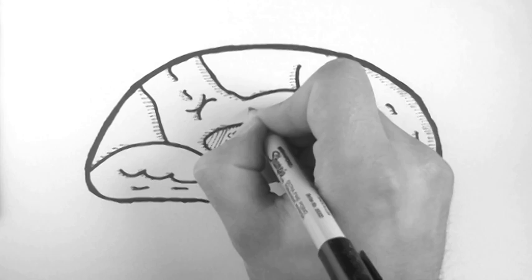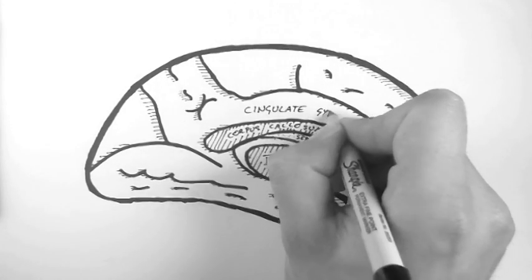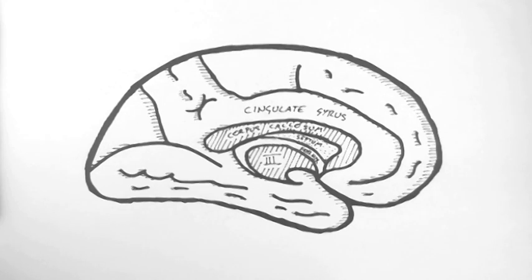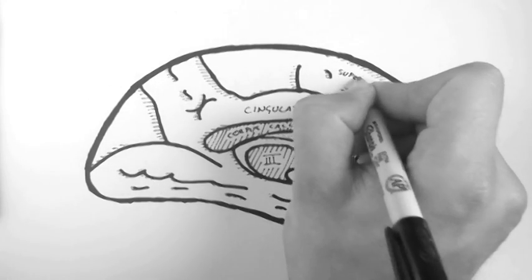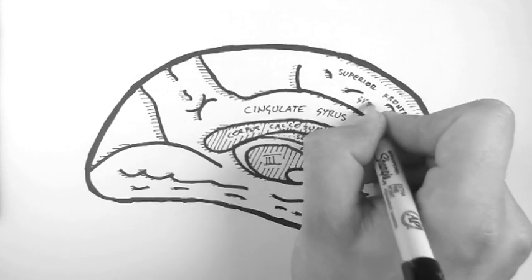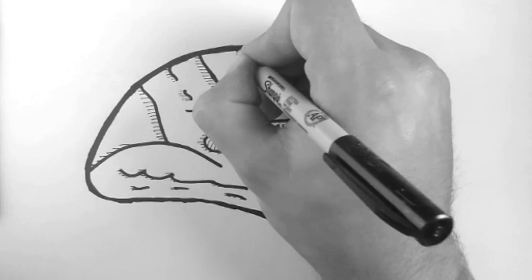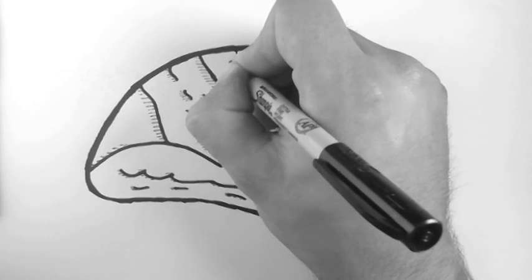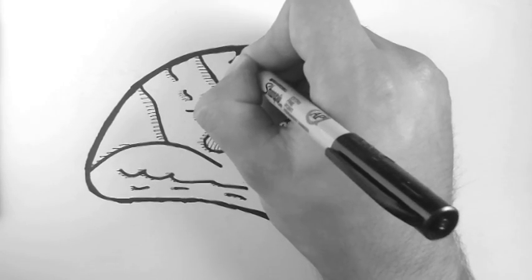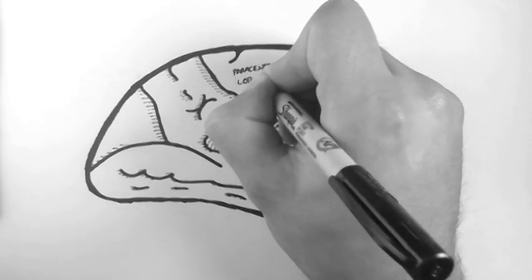Now just above the corpus callosum we have the cingulate gyrus. Above and anteriorly we have the superior frontal gyrus. I'll just add in a very important feature. Here we have the paracentral lobule.